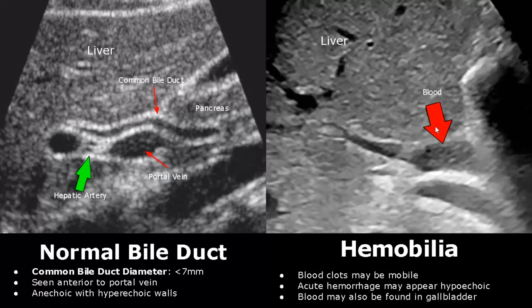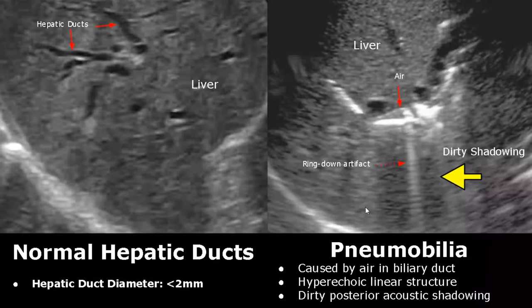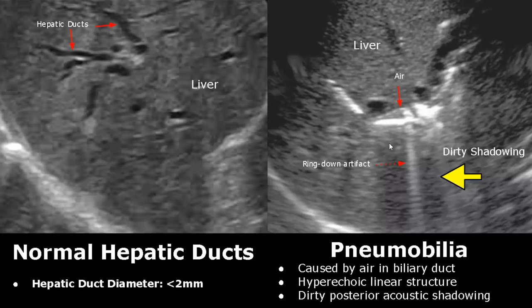Blood may also be seen in the gallbladder. In pneumobilia, air is found in the bile ducts. It is seen as hyperechoic linear structures with posterior dirty shadowing. You will see a grayish shadow along with a ring-down artifact.